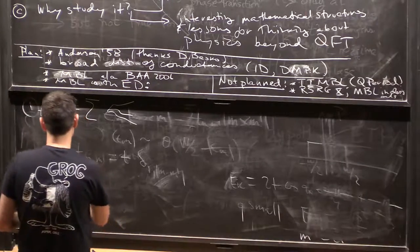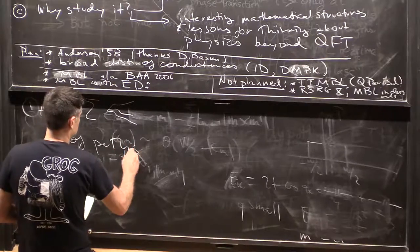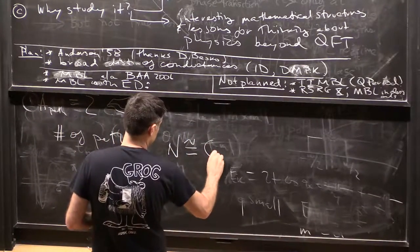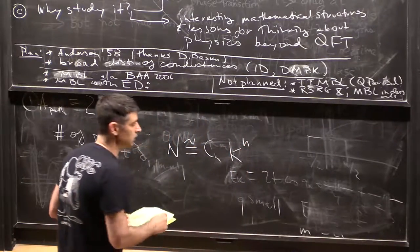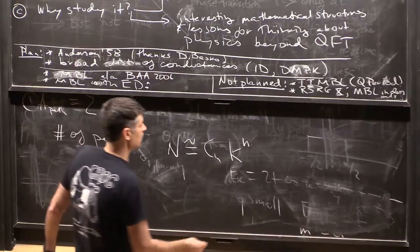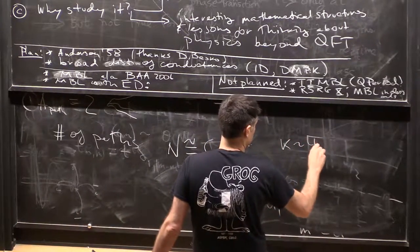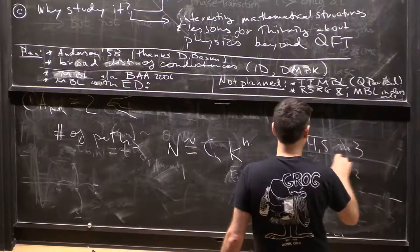The number of paths is some coefficient times exponential in their length, so k is 4.5 in 3D on a cubic lattice.